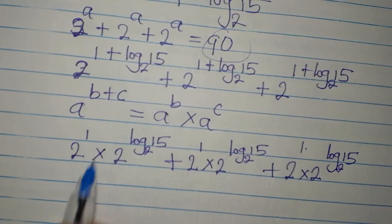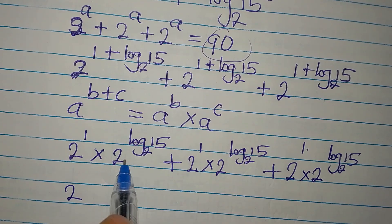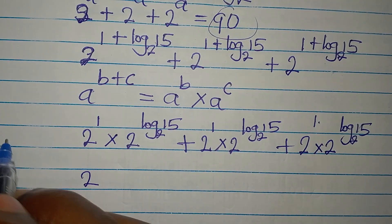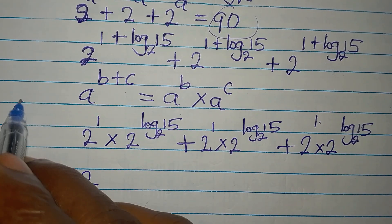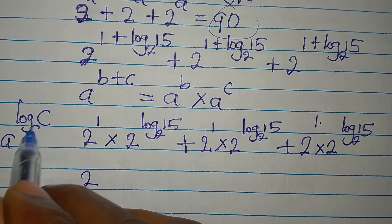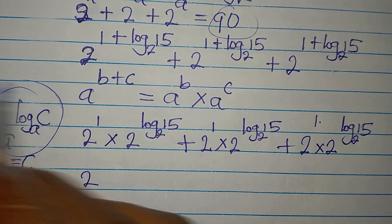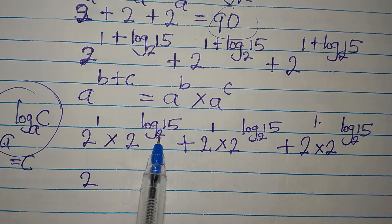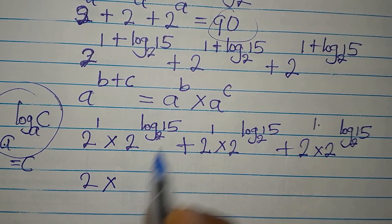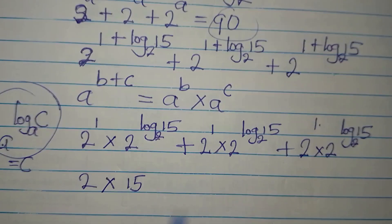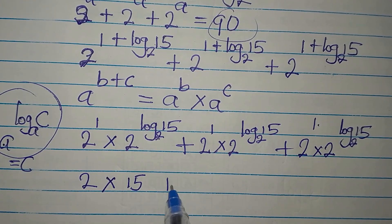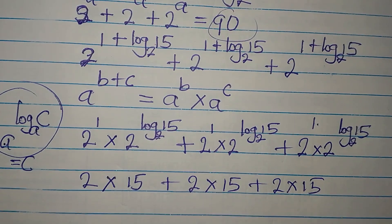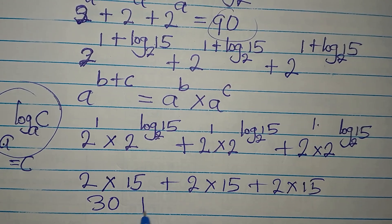2 to the power of 1 is 2. For 2 to the power of log₂(15): recall that a to the power of log base a of c equals c. Here a is 2 and c is 15, so 2^(log₂15) equals 15. So each term becomes 2 times 15. We have this in three places: 2×15 plus 2×15 plus 2×15.